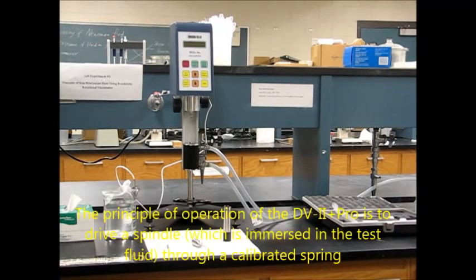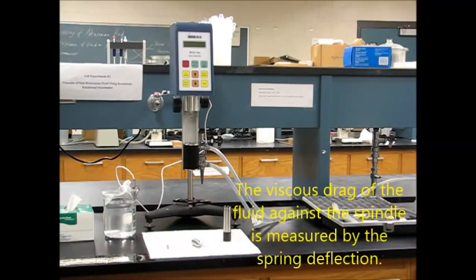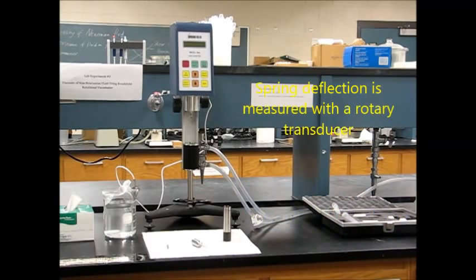The principle of operation of this viscometer is to drive a spindle through a calibrated spring. The viscous drag of the fluid against the spindle is measured by the spring deflection. Spring deflection is measured with a rotary transducer.